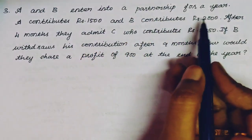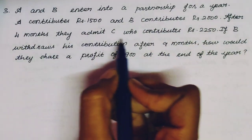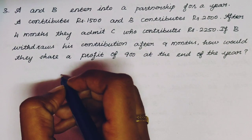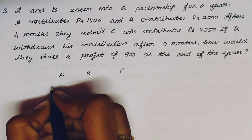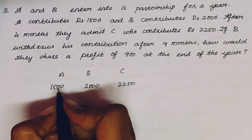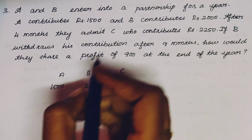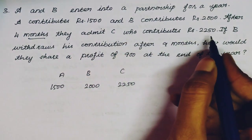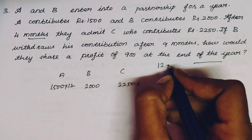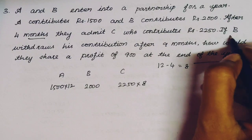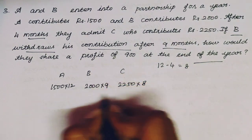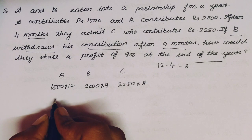Third question: A and B enter into a partnership for a year. A contributes Rs. 1,500 and B contributes Rs. 2,000. After 4 months they admit C who contributes Rs. 2,250. If B withdraws his contribution after 9 months, how would they share a profit of Rs. 900 at the end of the year? Total period is 12 months. C joins after 4 months so C invests for 12 − 4 = 8 months. B invests for 9 months.